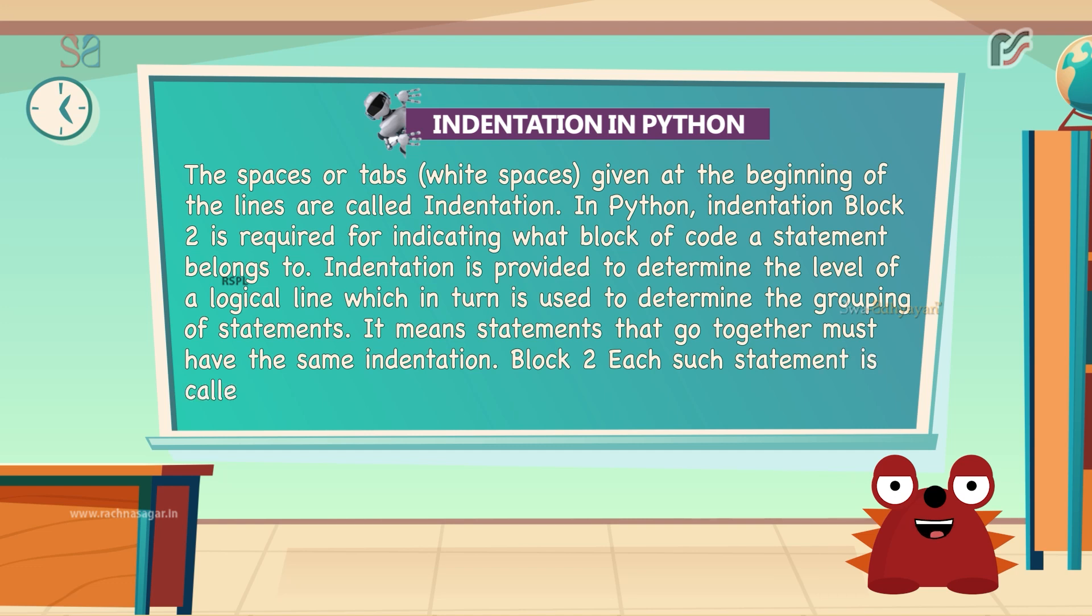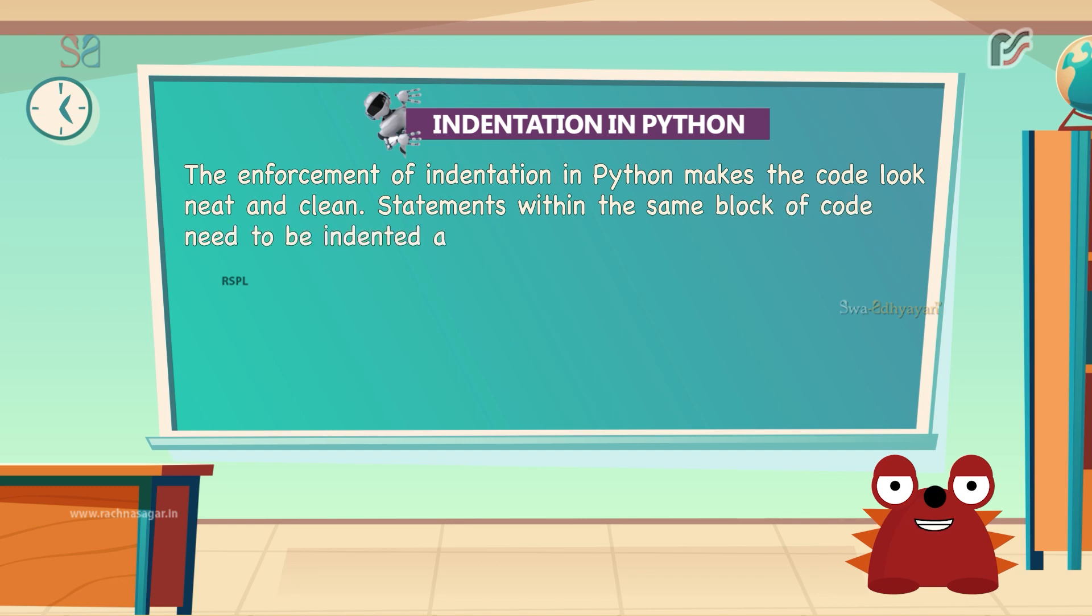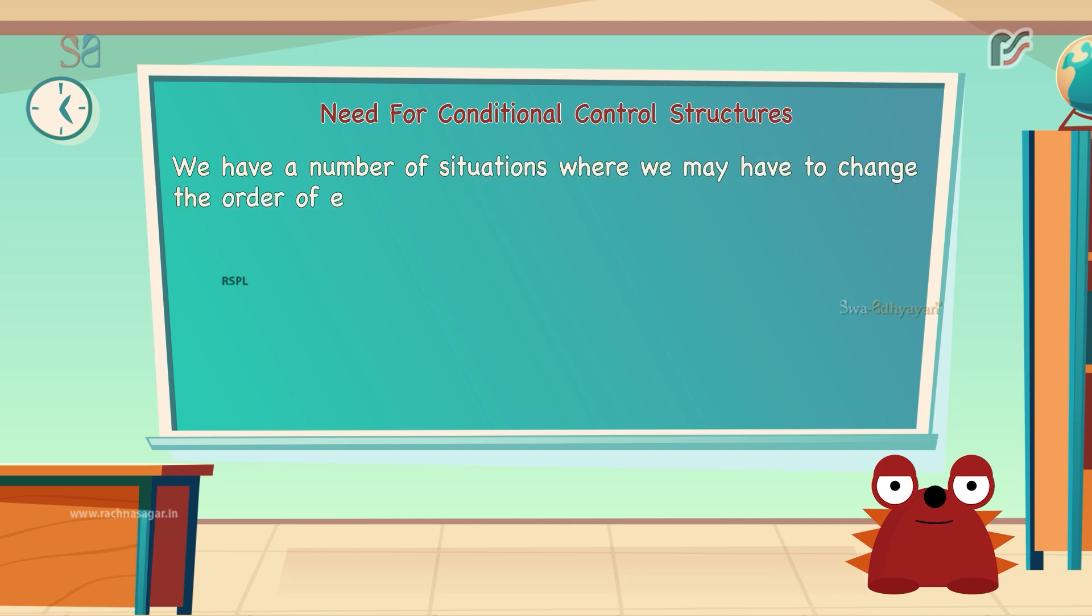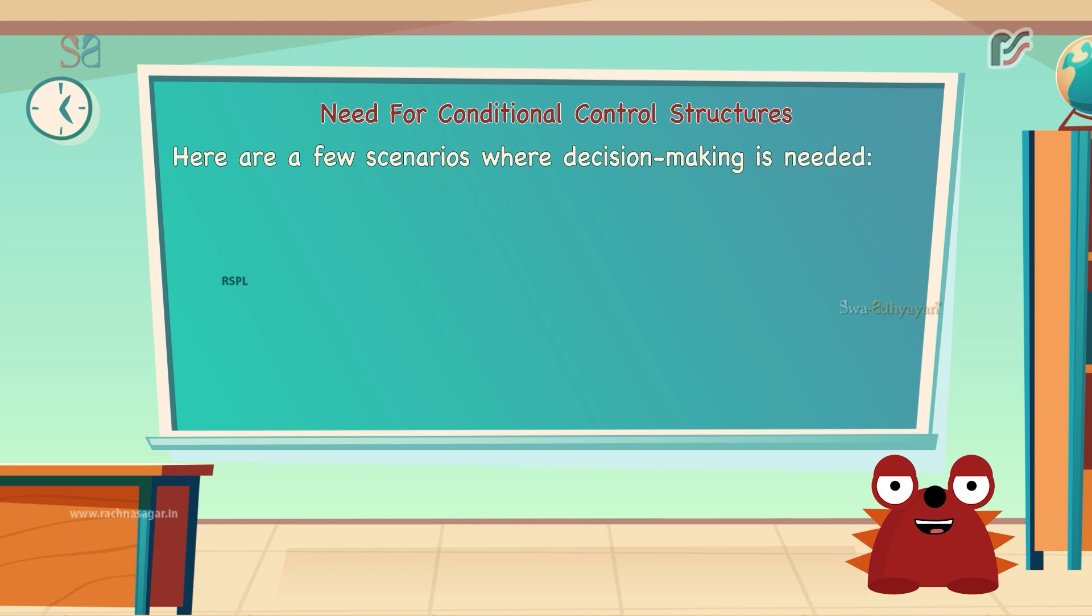Each such statement is called a block. The enforcement of indentation in Python makes the code look neat and clean. Also, statements within the same block of code need to be indented at the same level. Let's now understand the need for conditional control structures. We have a number of situations where we may have to change the order of execution of statements based on certain conditions. This involves a kind of decision making to see whether a particular condition has occurred or not and then direct the computer to execute certain statements accordingly.